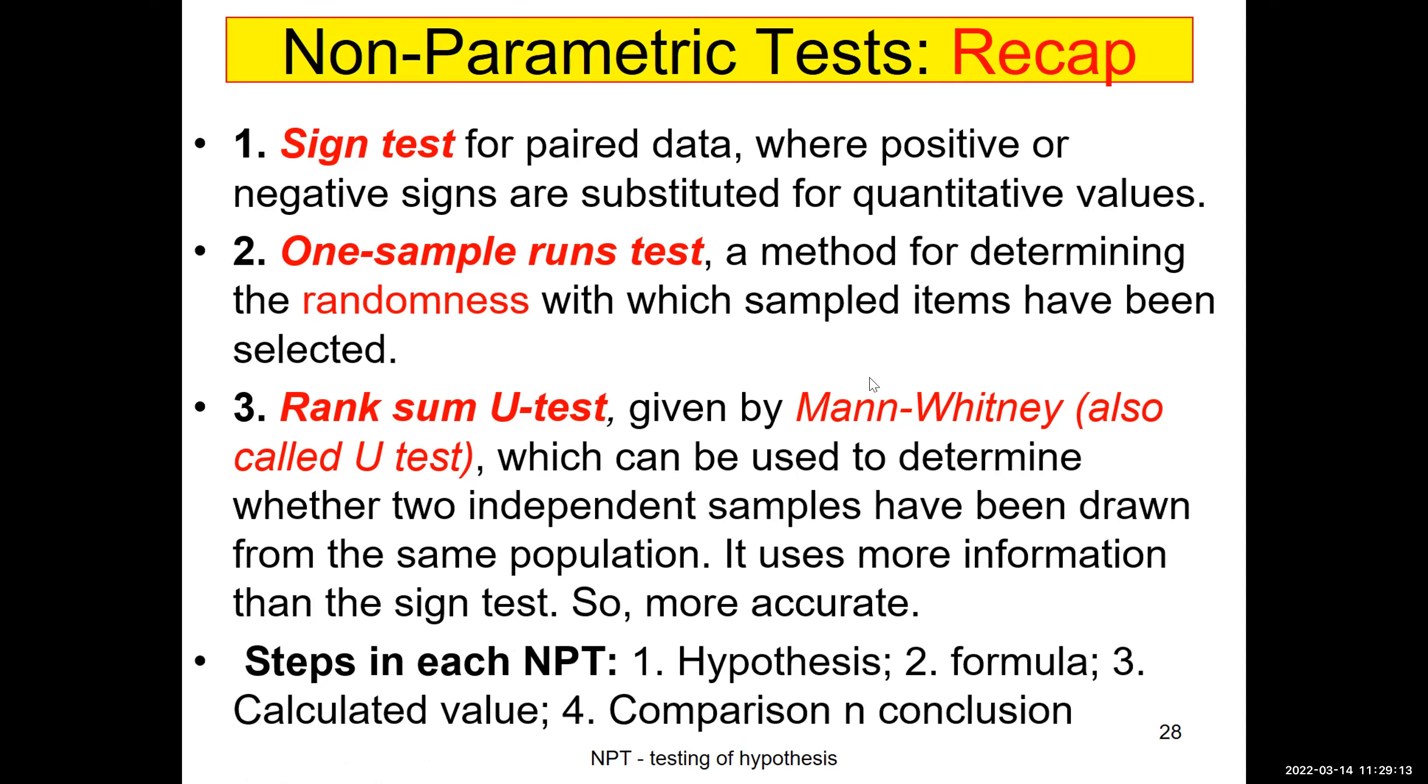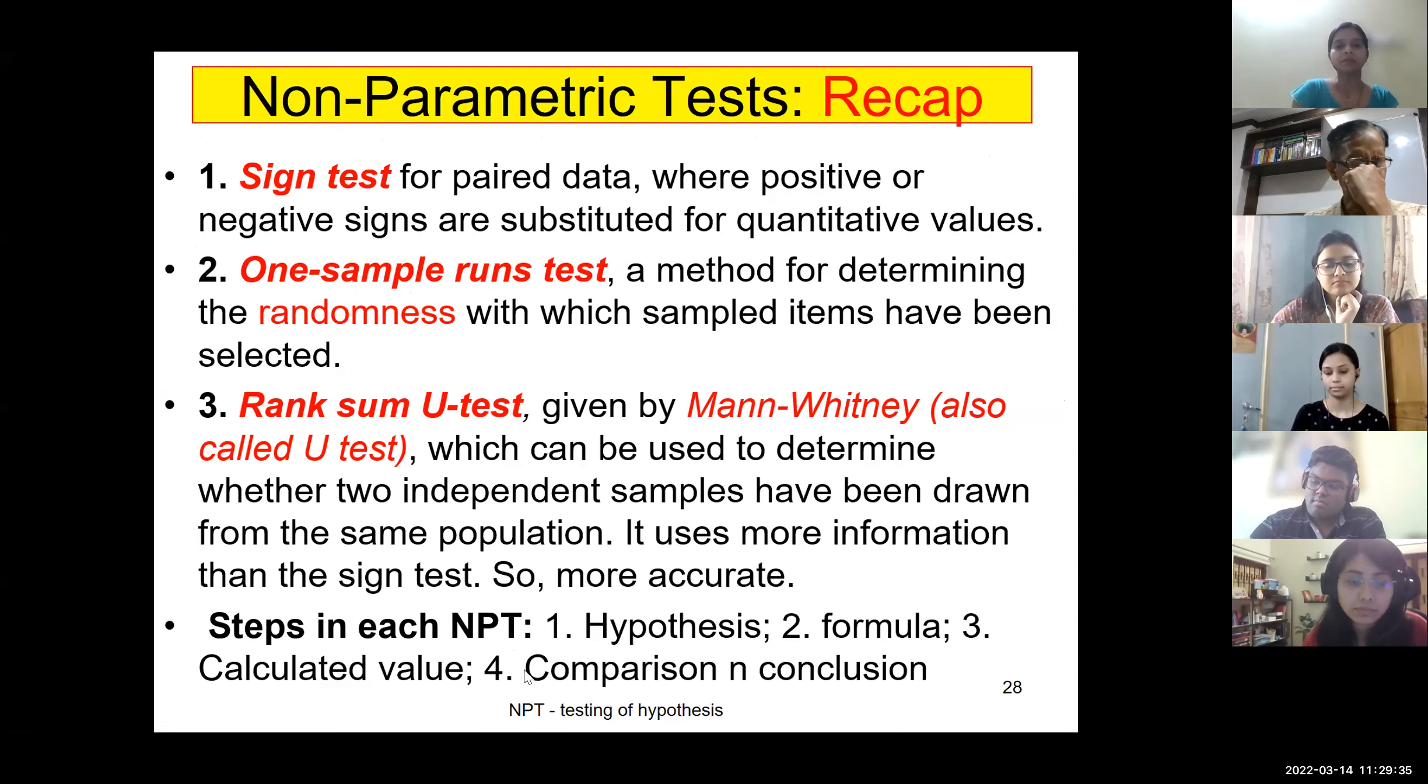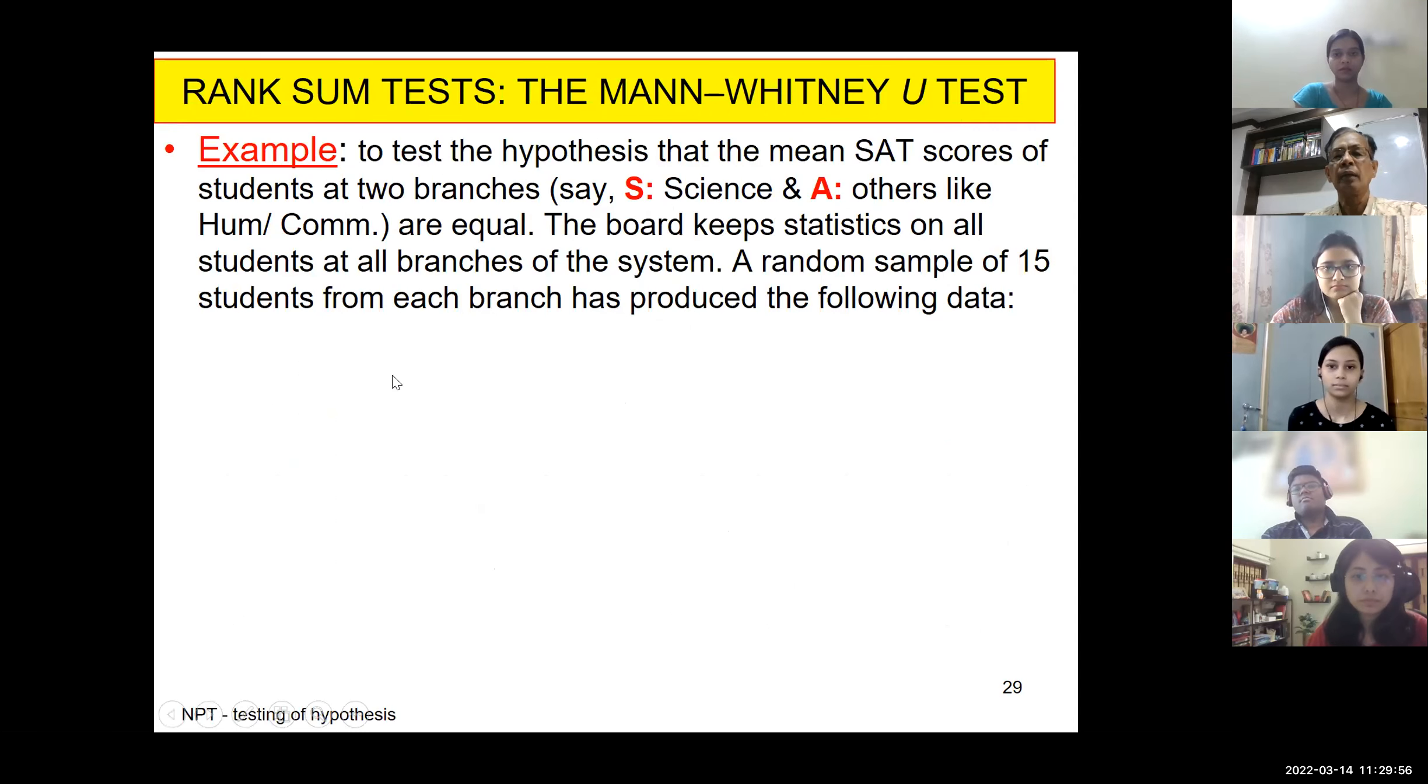Now don't forget, whatever may be the test, it's better to follow the four steps. What are the four steps, Sanchari? You have to define null test and alternative hypothesis. Then you find the calculated value. This has to be compared with tabulated value. And don't forget, for non-parametric test, we are assuming large sample property and we'll be comparing with 1.96 or 2.58. 1.96 for 5% level and 2.58 for 1% level. Let us take one numerical sum so that it will be very clear when we apply a rank sum test.